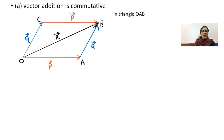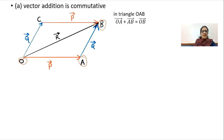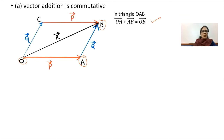To prove this, consider triangle O, A, B. Vector OA bar is P bar and vector AB bar is Q bar. By triangle law, OA bar plus AB bar equals OB bar, so P bar plus Q bar equals R bar. Now consider triangle O, C, B. Vector OC bar is Q bar and vector CB bar is P bar. By triangle law, OC bar plus CB bar equals OB bar, so Q bar plus P bar equals R bar.